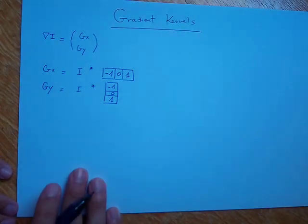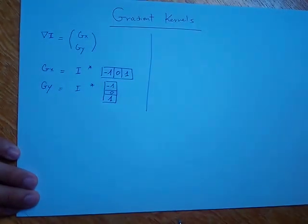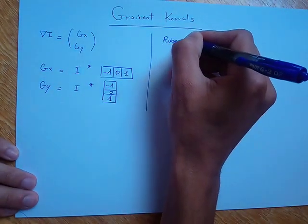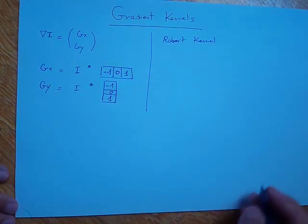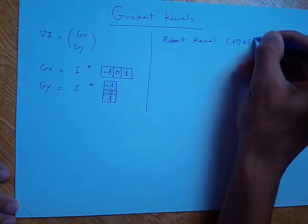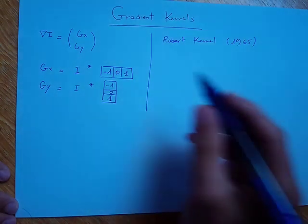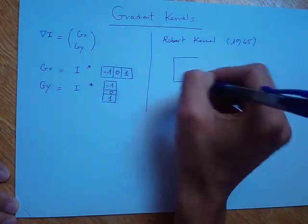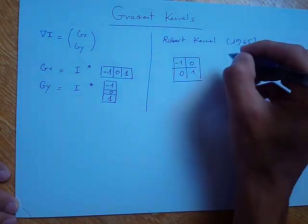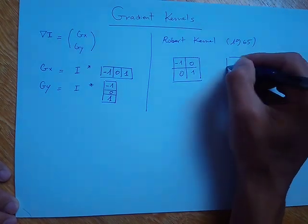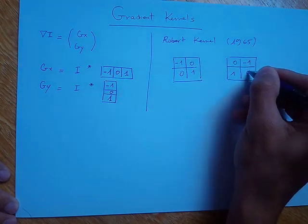There is another, better alternative called the Roberts kernel, first proposed by Roberts in 1965. We can have different pairs of kernels — for example, one kernel could be: 1, 0, 0, minus 1, and the second kernel could be: minus 1, 1, 0, 0.